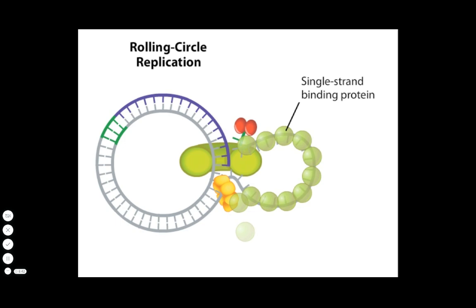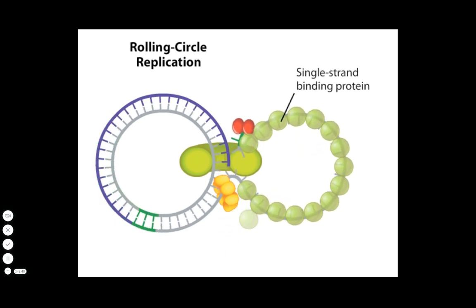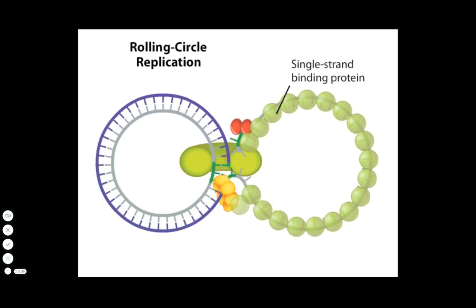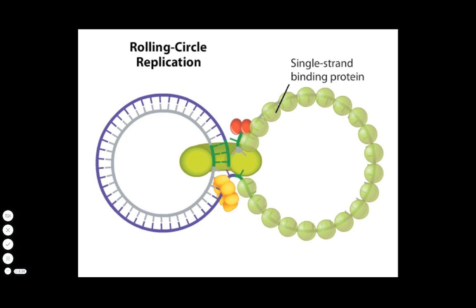As replication proceeds, the nicked strand, which continues to be covered with single-strand DNA binding proteins, progressively peels off until replication of the intact strand is complete.